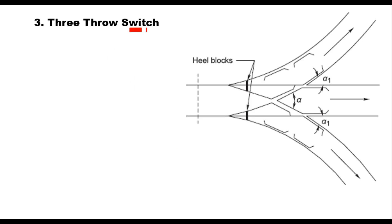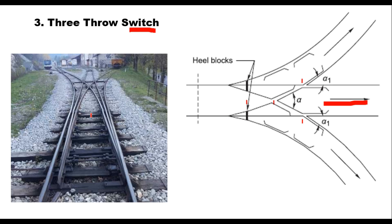This is called a three-throw switch. When two turnouts from the same tangent point of a straight track are taken out, the arrangement is known as three-throw. The turnouts may be on either side or the same side of the straight track. Each turnout has the tongue rail lying side by side, and there are three crossings. This type of turnout has many objectionable features and is almost out of use nowadays.